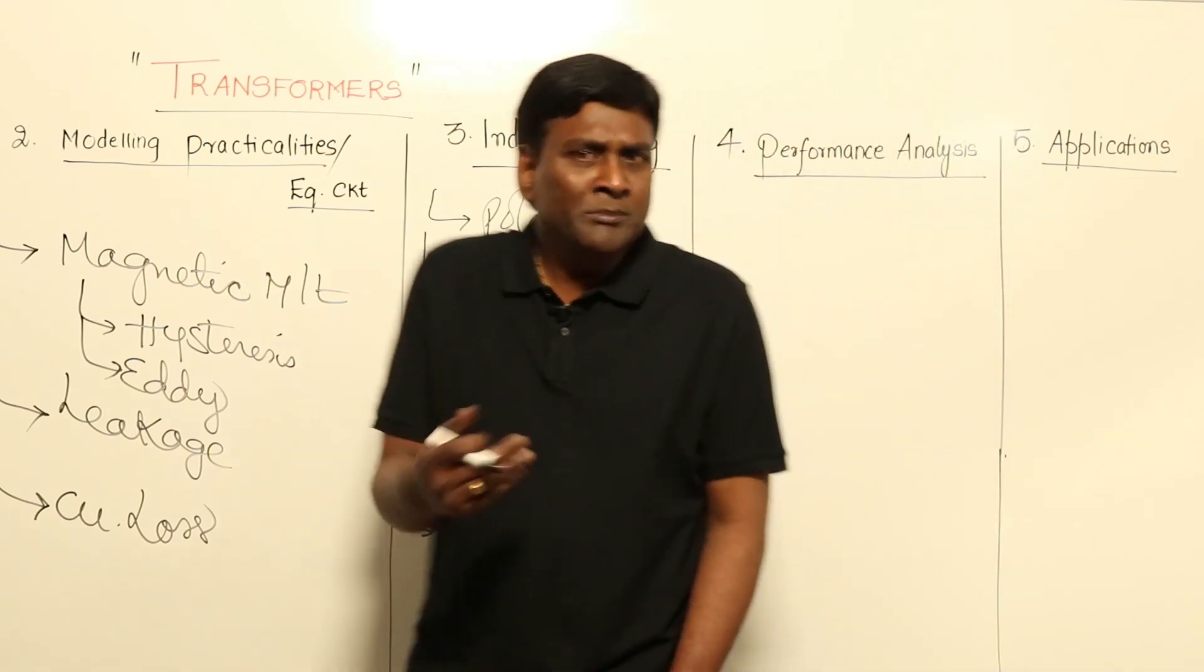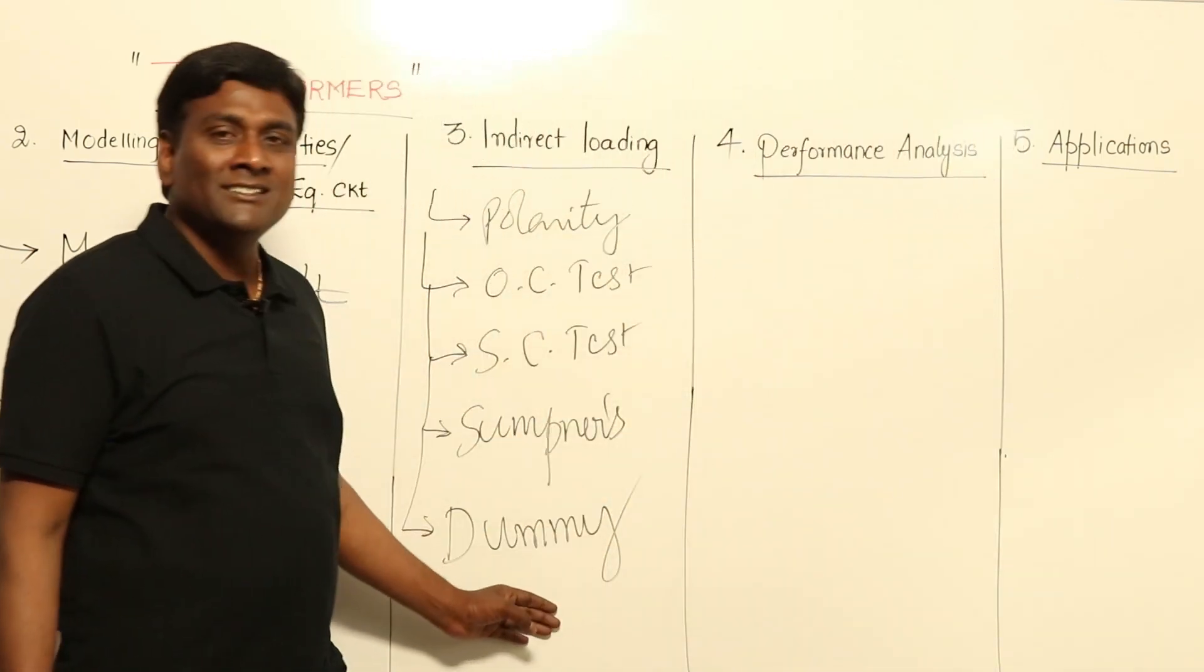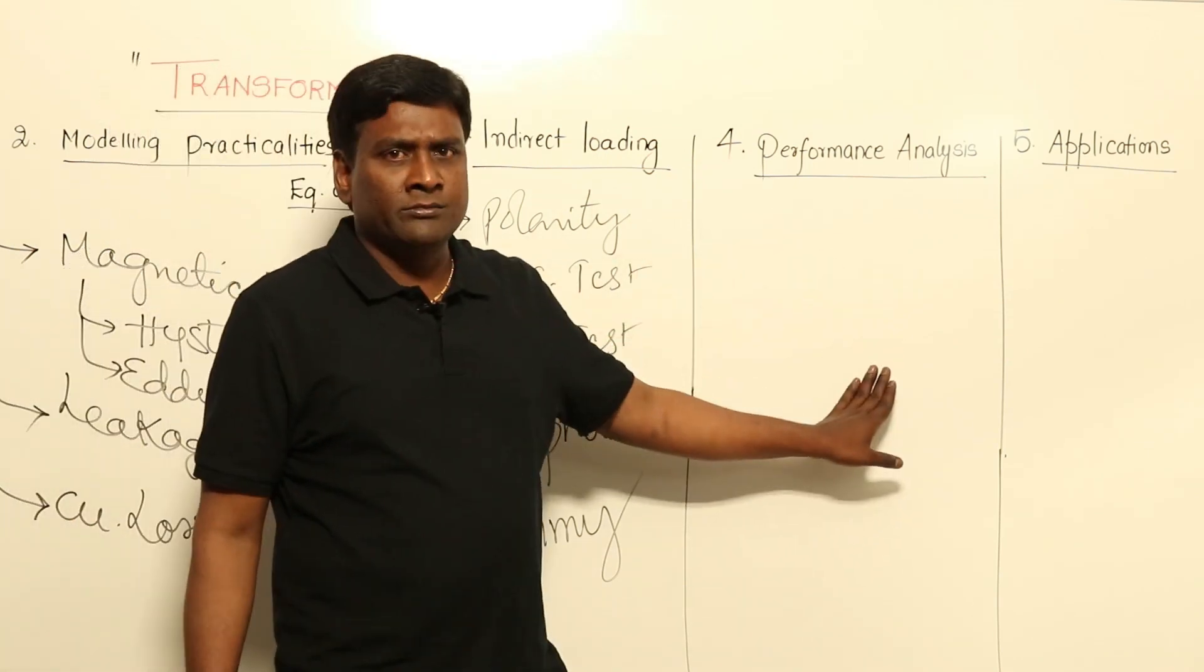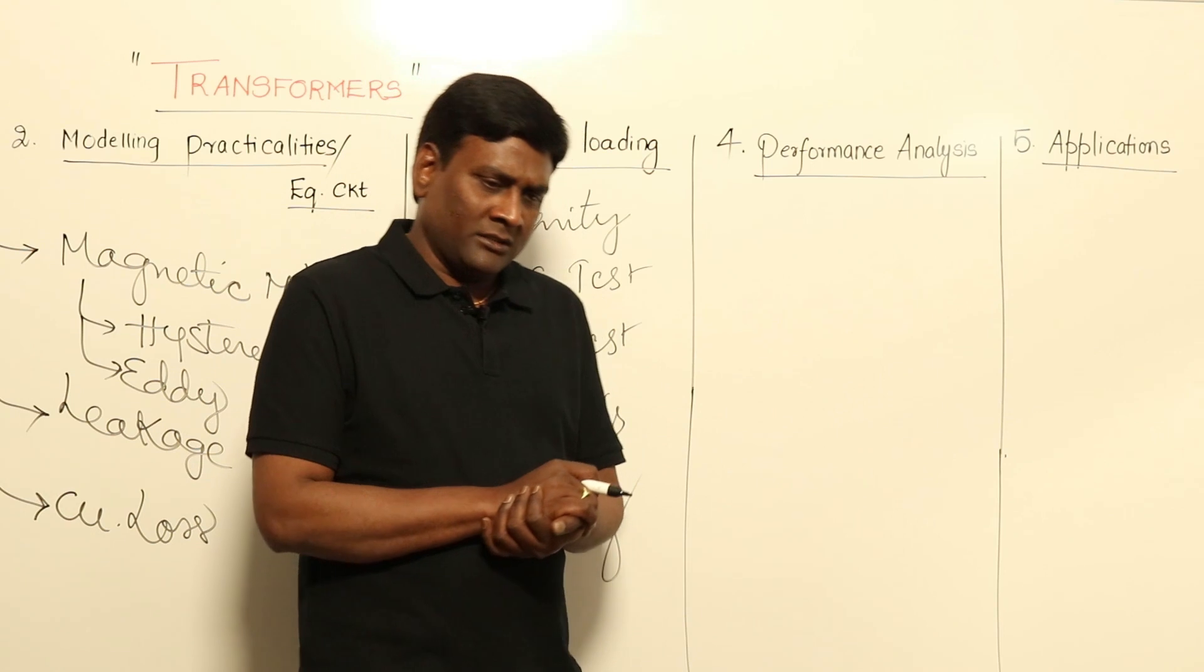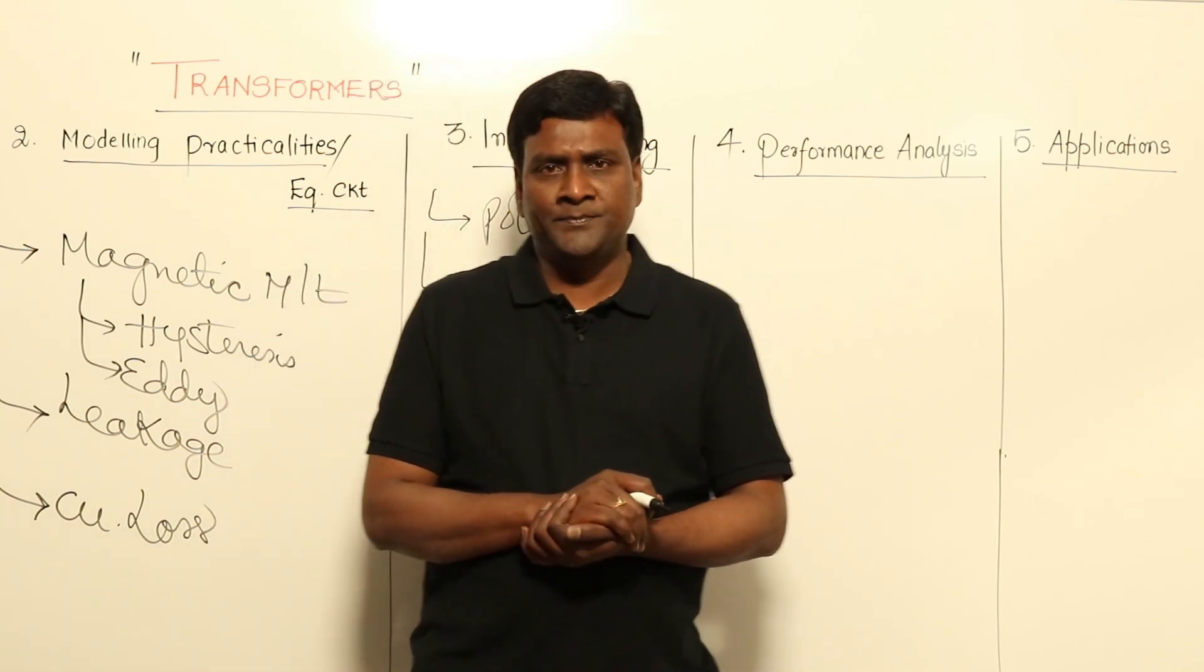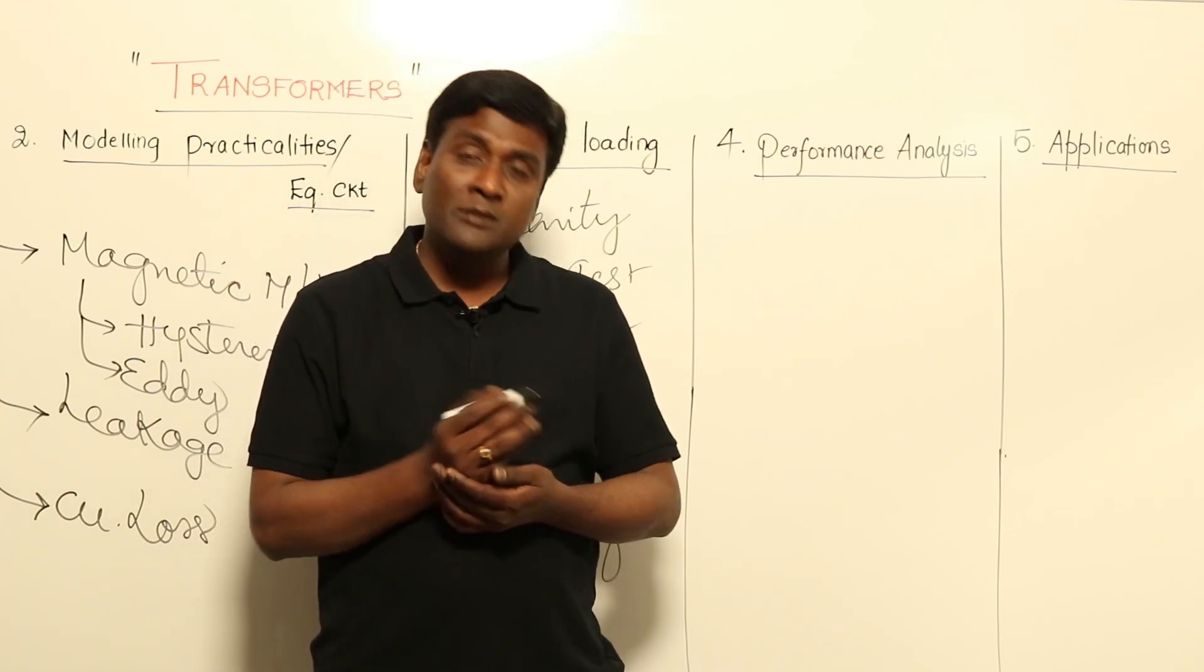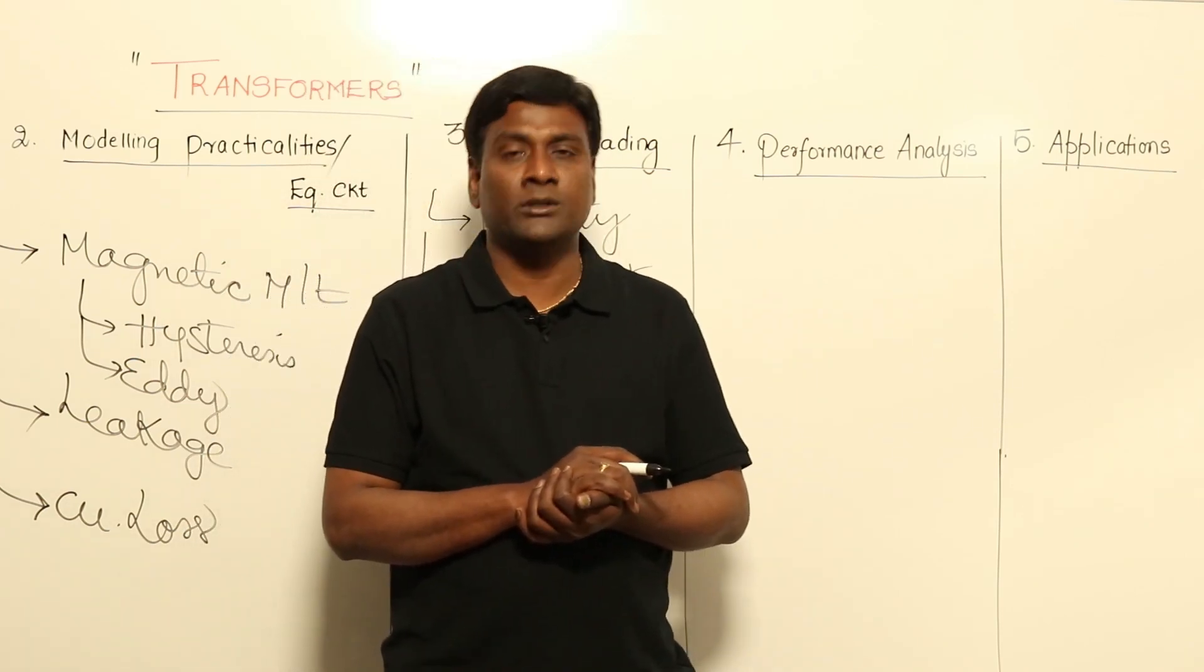Once these tests are done, these tests will give you the results such that equivalent circuit parameter values will be found in performance analysis. Basically, we can say one thing: transformer is highest efficiency machine. Why is transformer having highest efficiency compared to all other machines? Because all other machines are having rotating parts.